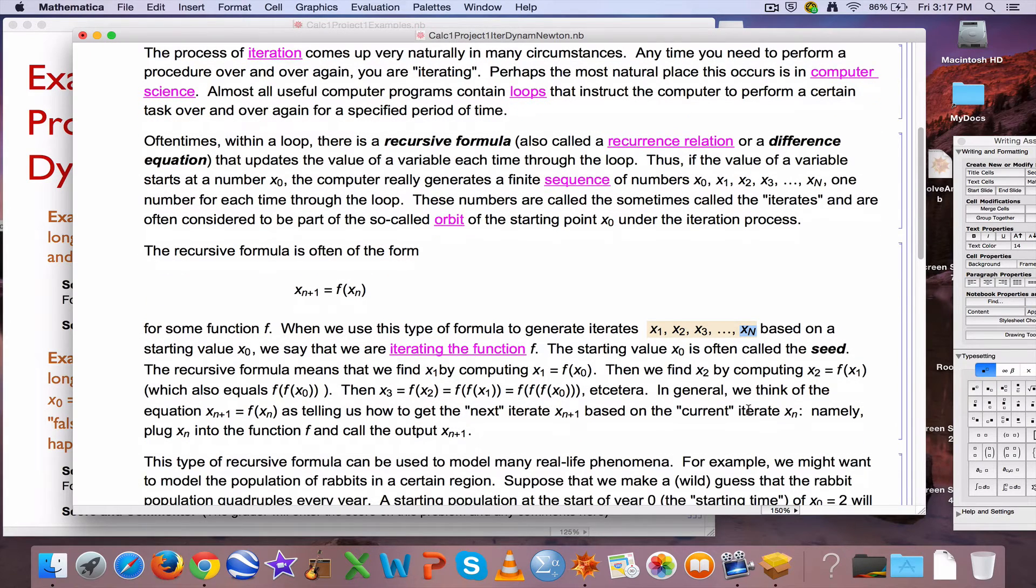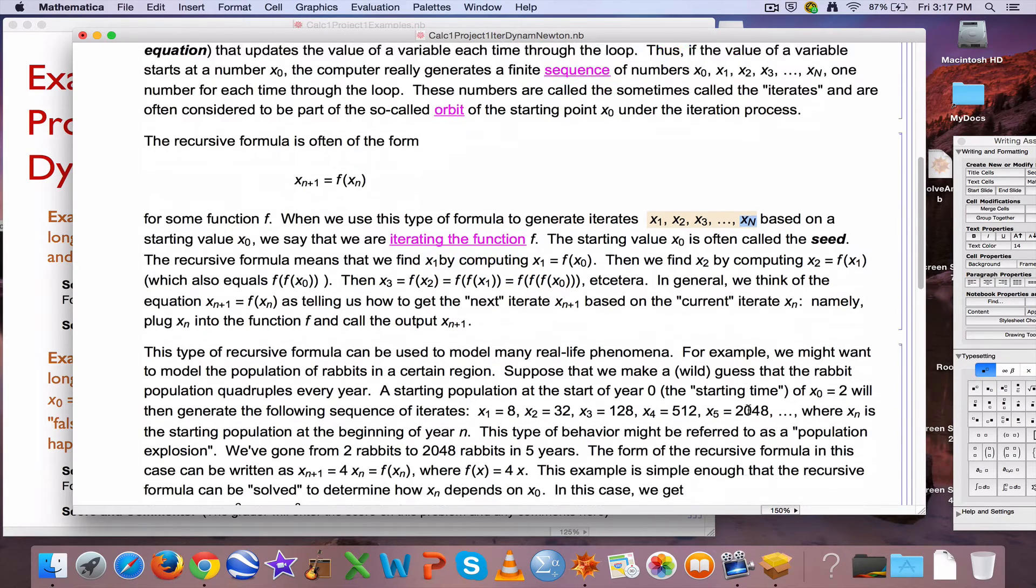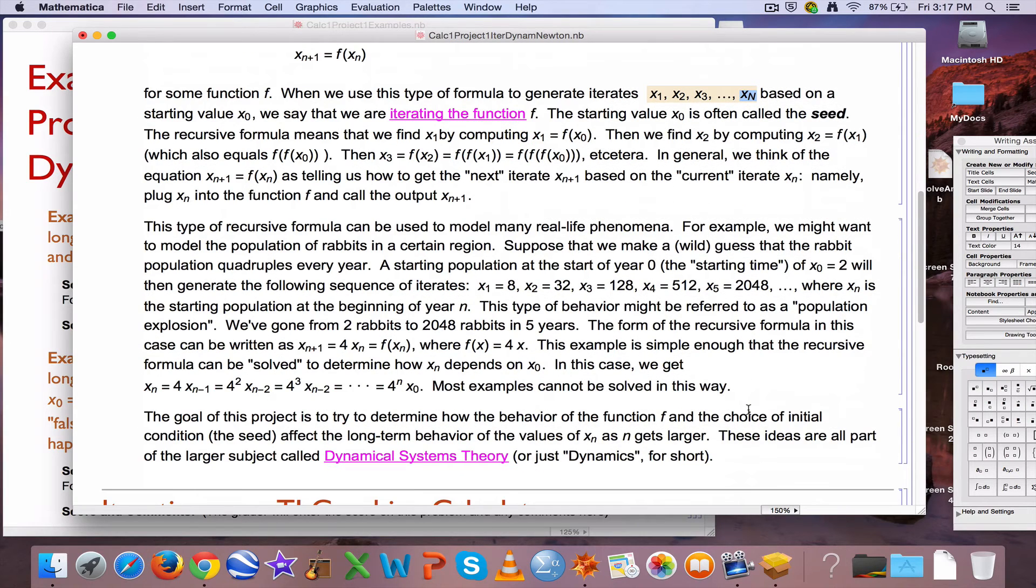Alright, so we just keep reapplying the function f. There are applications of this in computer science certainly, you need to iterate a lot, you need to do loops. There are some biology applications you might imagine, rabbit populations growing very fast, like quadrupling every year. Here, this is described right here.